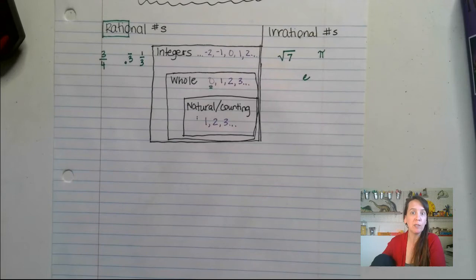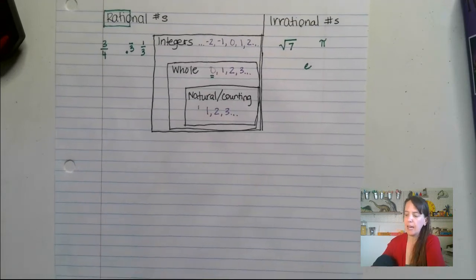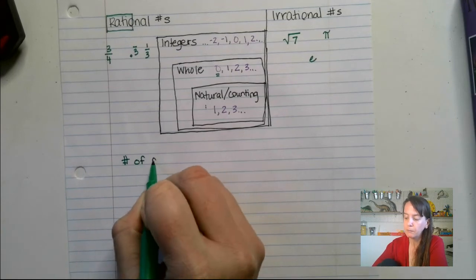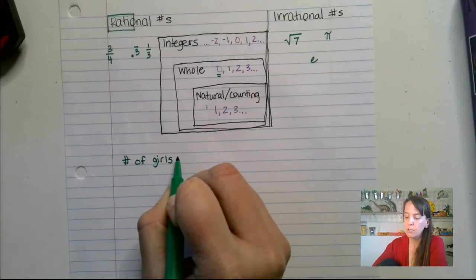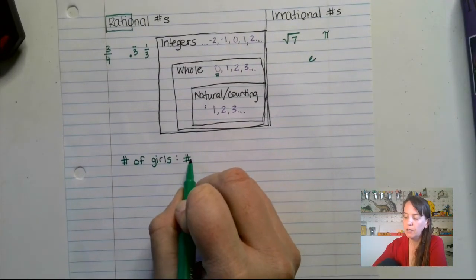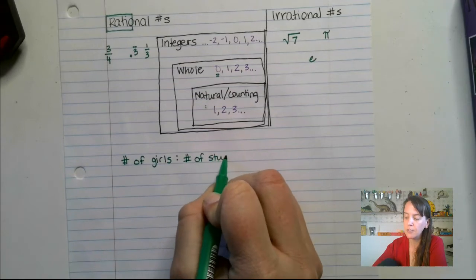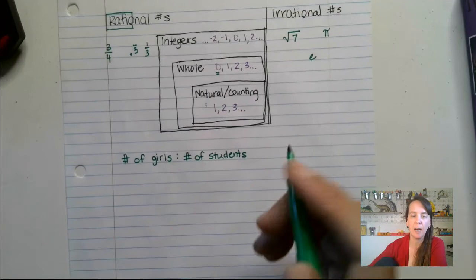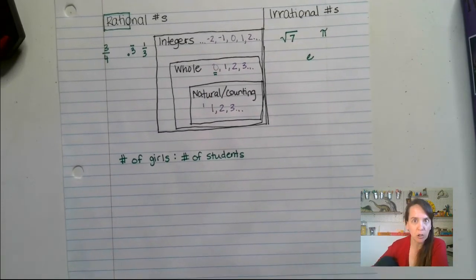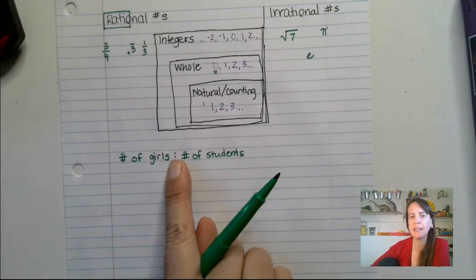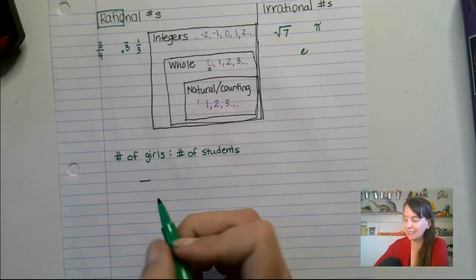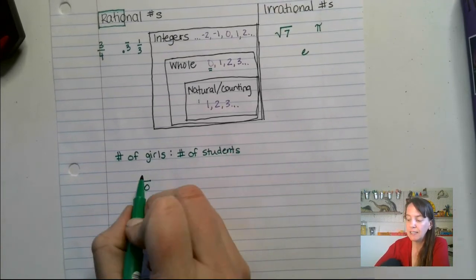So let's talk about real-world situation. If we had a case where we had the number of girls to the number of students in a classroom, that's called a ratio, right? Now ratio can be written like this, or it can be written as a fraction. Let's say there's 10 kids in the class and there are 7 girls. There is a fraction,